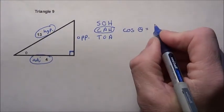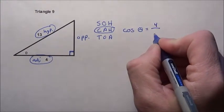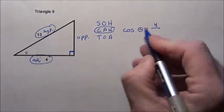Adjacent first. The adjacent is 4, so it's 4 over the hypotenuse side. That was given as 13.